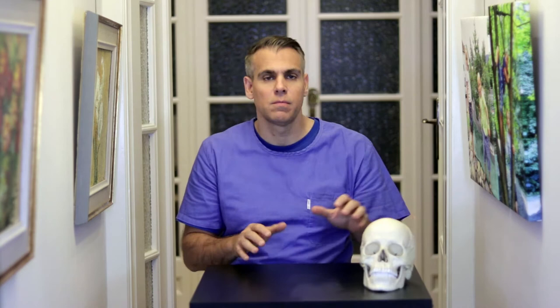We'll now consider these over specific periods of development, beginning with the infant mandible. The mandible is small at birth with a short ramus. The position of the mandibular foramina will be just under two-thirds distance from the coronoid notch to the posterior border of the ramus, at the level of the alveolar ridge, midway between the mandibular angle and the condyle.